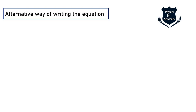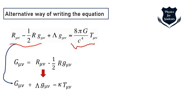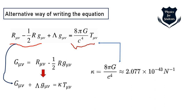We can alternatively write the Einstein field equation more compactly. The term R_μν minus half R·G_μν can be summarized as G_μν, the Einstein tensor component. Substituting this, the equation becomes G_μν plus remaining factors equals the kappa term κ·T_μν. The factor 8πG/c⁴ is the kappa term, approximately equal to 2.07×10⁻⁴³, which is the Einstein gravitational constant.